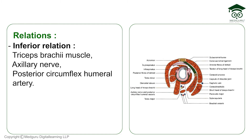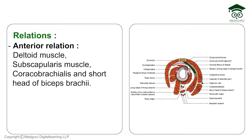Inferiorly there are three structures: the triceps brachii muscle, the axillary nerve, and the posterior circumflex humeral artery. Anteriorly there are four muscles: deltoid, subscapularis, coracobrachialis, and the short head of biceps brachii. Posteriorly, we can remember the mnemonic DIT — deltoid, infraspinatus, and teres minor.